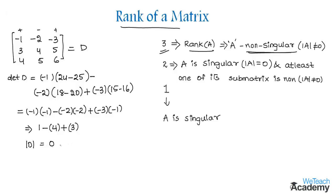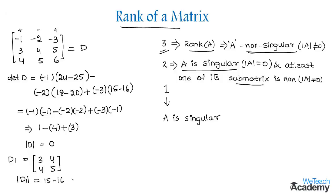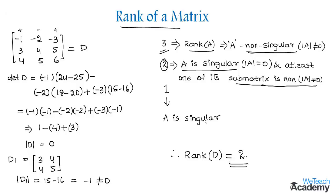Since the determinant value is 0, matrix D is a singular matrix. Now we need to check its 2 by 2 sub-matrices. Let sub-matrix D1 be obtained by deleting the first row and the last column, giving the matrix with elements 3, 4, 4, 5. The determinant of D1 is AD minus BC, which gives 15 minus 16, equaling minus 1. Since minus 1 is not equal to 0, the sub-matrix is non-singular, so the rank of D equals 2. Note that if every sub-matrix is singular, the rank would be 1, and the rank of a null matrix is defined as 0. This was a basic introduction to rank of a matrix.